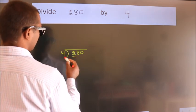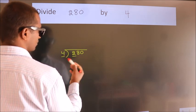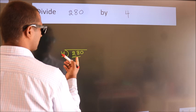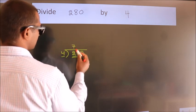Here we have 2. Here 4. 2 is smaller than 4, so we should take 2 numbers. 28. When do we get 28? In 4 table. 4 7s, 28.